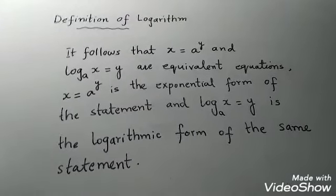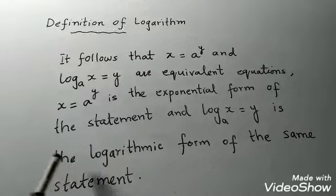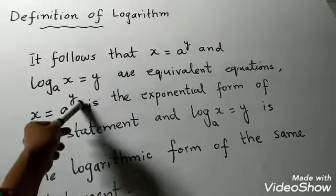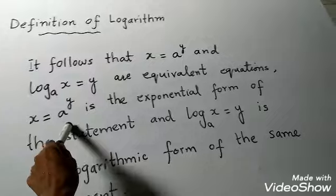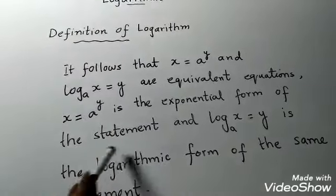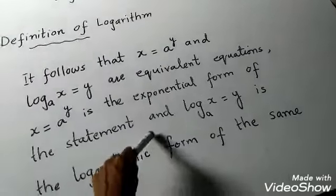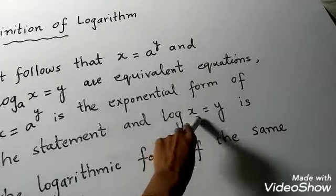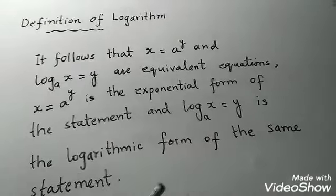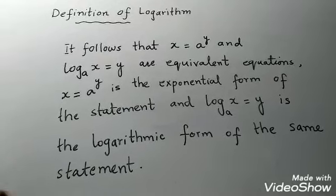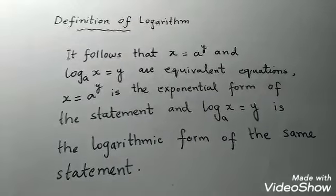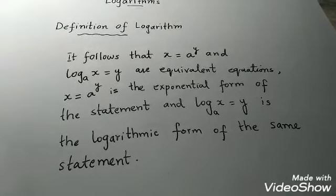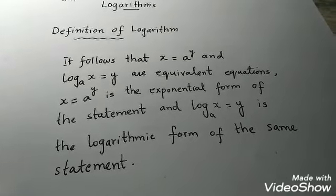X is equal to A exponent Y is the exponential form of the statement, and log A, X is equal to Y is the logarithmic form of the same statement. Here, the logarithmic and exponential forms are both defined.